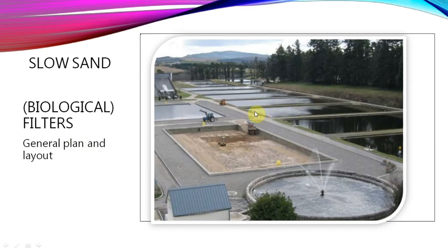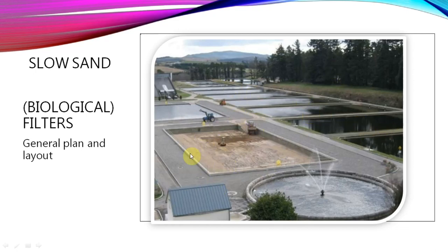Slow sand or biological filters need a very large area, as you can see from the pictures. Each filter bed, after a few weeks, becomes less efficient. We need to remove the top layer of sand and replace it with new sand, then wait one to two weeks for the biological zooglial layer to reform. Since we can't stop the water supply, we need many similar plants running simultaneously. This requires very large land area, unlike rapid sand filters.